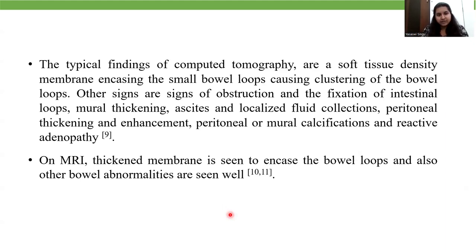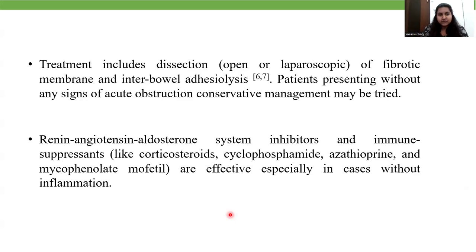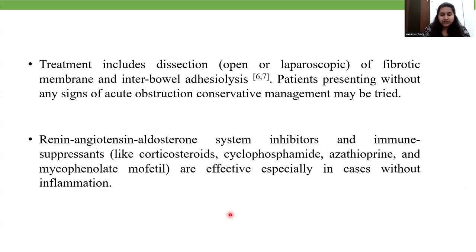On CT, a soft tissue density membrane encasing the small bowel loops causing clustering of the bowel loops is seen. Other signs include signs of obstruction and fixation of the intestinal bowel loops. Mural thickening, ascites, or localized fluid collection can be seen. On MRI, the thickened membrane is seen to encase the bowel loops and other bowel abnormalities may be seen. Treatment includes dissection of the fibrotic membrane and inter-bowel adhesiolysis. In patients presenting without any signs of intestinal obstruction, conservative management may be tried. Drugs like renin-angiotensin-aldosterone system inhibitors and immunosuppressants are effective in cases without inflammation.